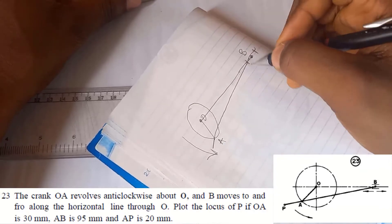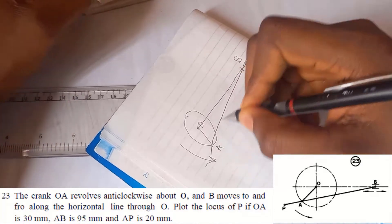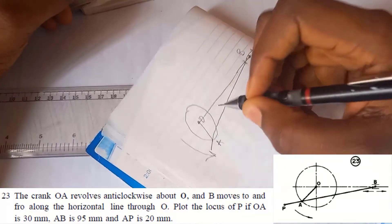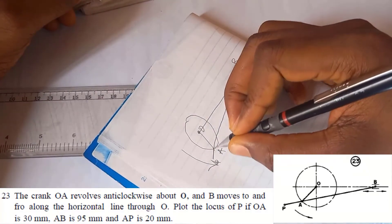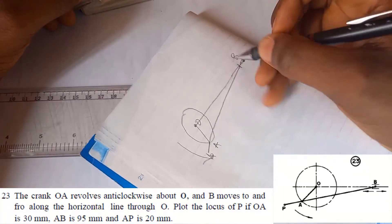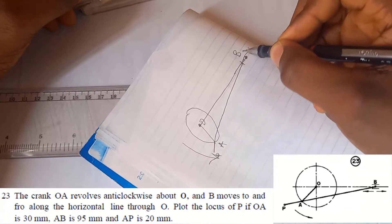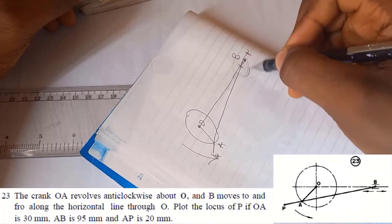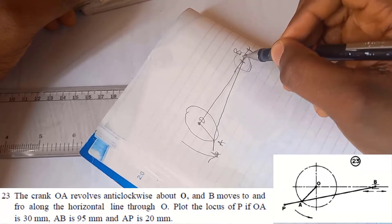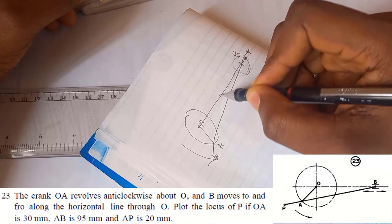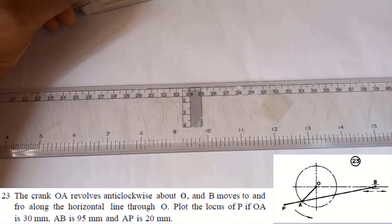AB is 95 mm and AP is 20 mm, so we have something like this. This line PAB moves on this horizontal line, so this point B at every instance of time moves through this horizontal line. So let's begin plotting and drawing.